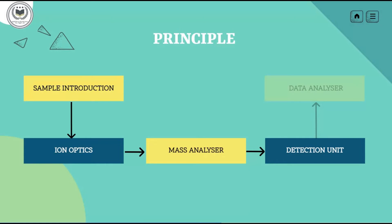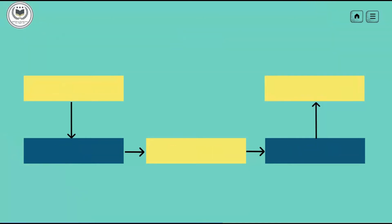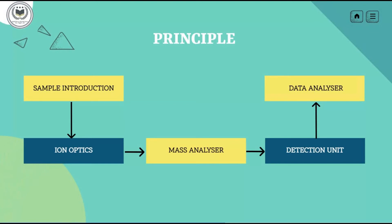At last, comes the data analyzer. ICP-MS accurately determines how much of a specific element is in the material analyzed. In a typical quantitative analysis, the concentration of each element is determined by comparing the counts measured for a selected isotope to an external calibration curve that was generated for that element.